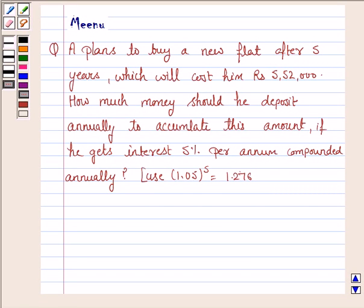Hello and welcome to the session. Let's work out the following problem. It says, a man plans to buy a new flat after 5 years which will cost him Rs. 5,52,000. How much money should he deposit annually to accumulate this amount if he gets interest 5% per annum compounded annually?